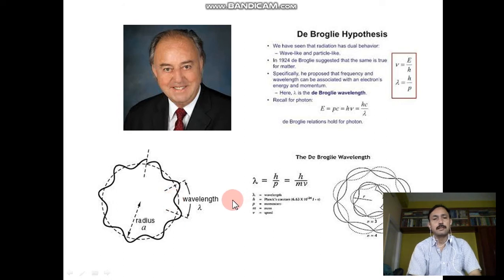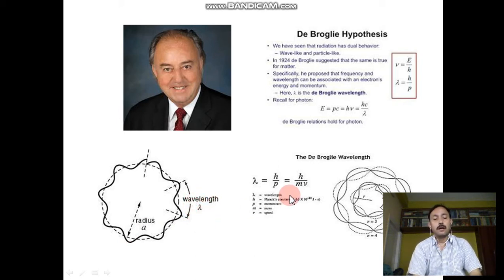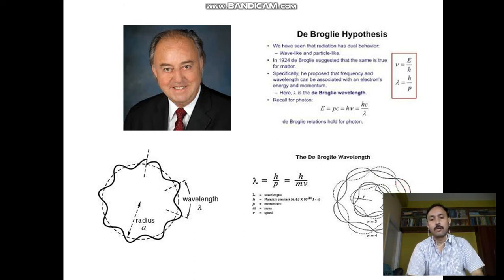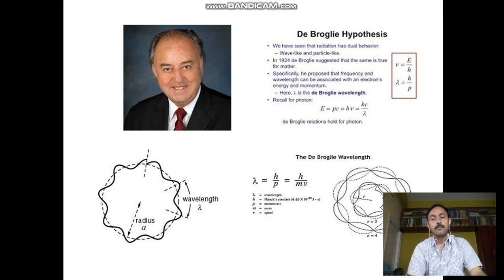This figure suggests that an electron is revolving around the nucleus, with radius of orbit A, producing a wavelength lambda. De Broglie proposed that a wave is always associated with every moving particle like an electron. Its corresponding wavelength is called the de Broglie wavelength, given by λ = h/p, where p is the momentum and h is Planck's constant. MV represents momentum.